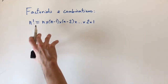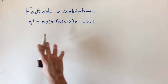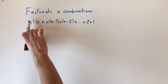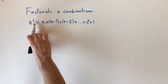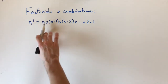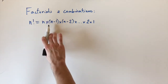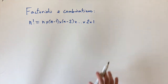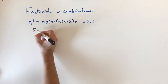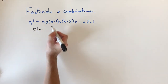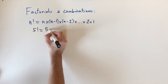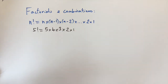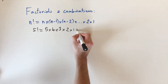Today we're looking at factorials and combinations. Starting off, we have the definition of a factorial. We write the symbol n for the number and then the exclamation mark as the symbol for the factorial. It's defined as n times n minus 1 times n minus 2, all the way down to 2 times 1. For example, 5 factorial is 5 times 4 times 3 times 2 times 1, which equals 120.